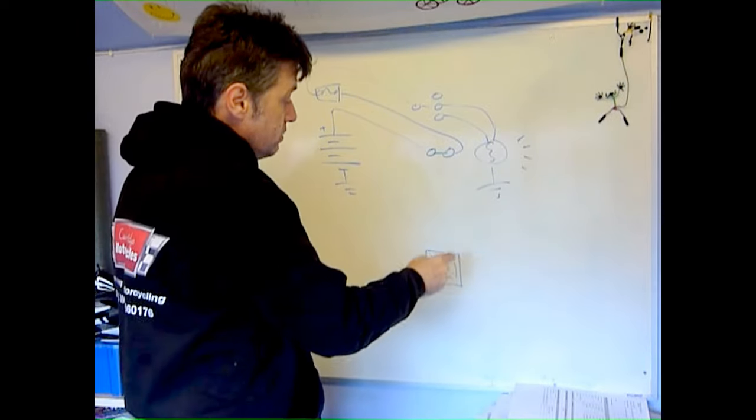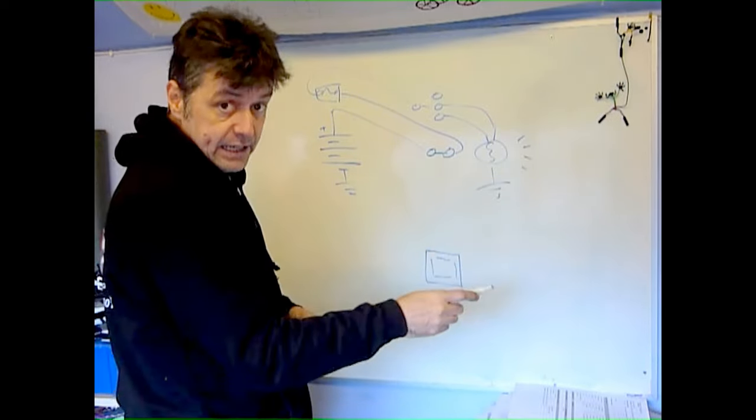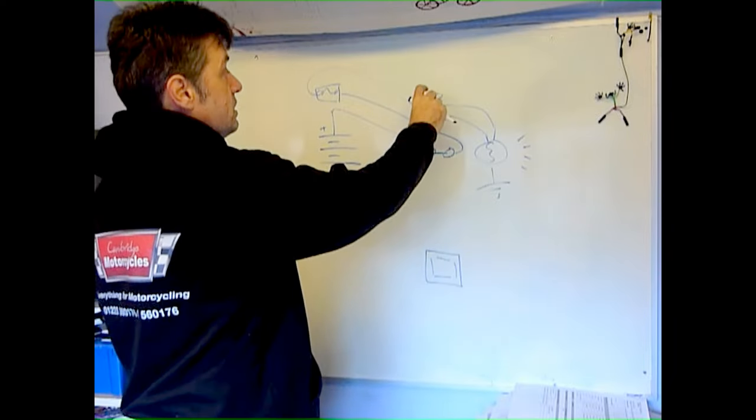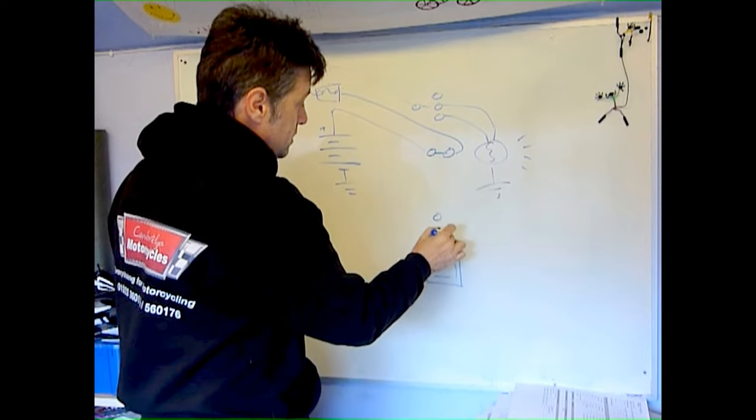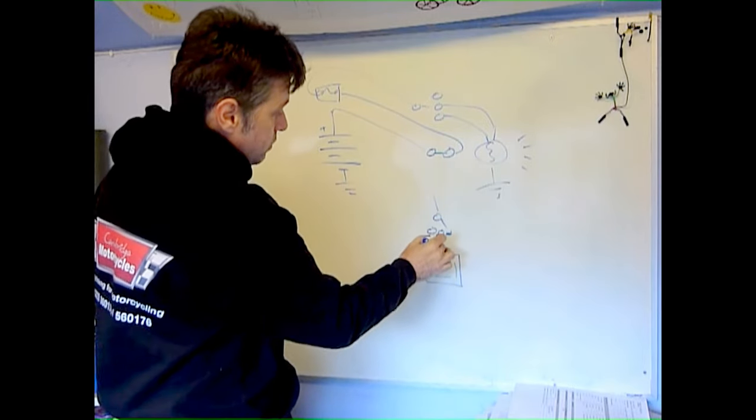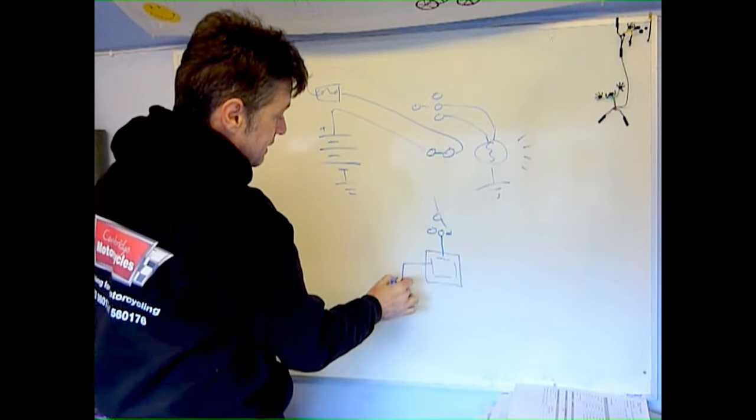So in this case, we want the low current side to be the handlebar switch. So we wire that to the low current side of the relay.